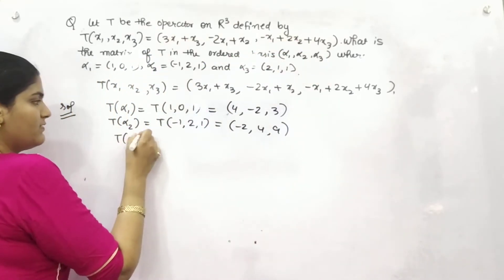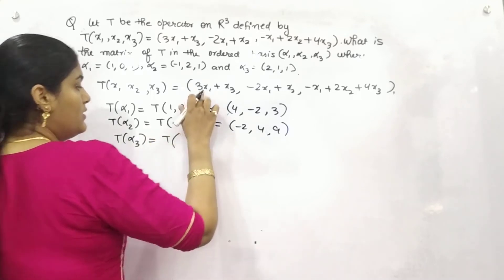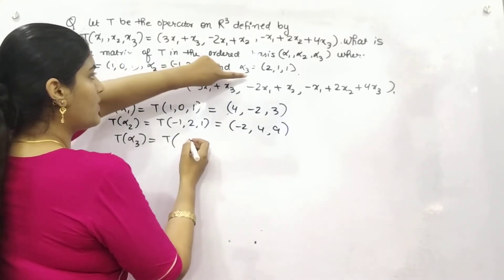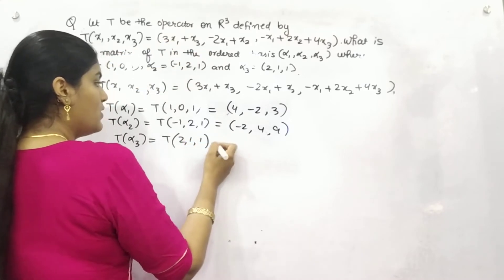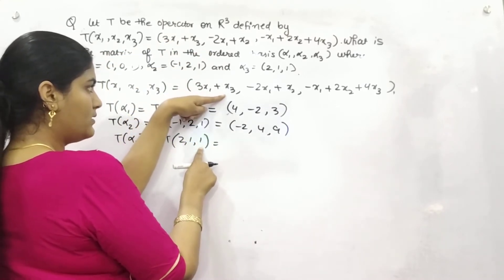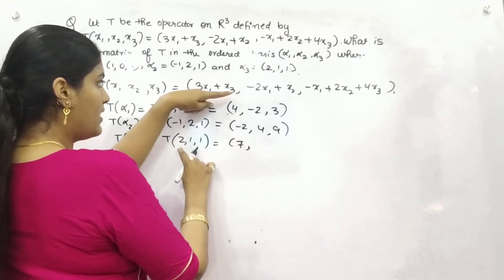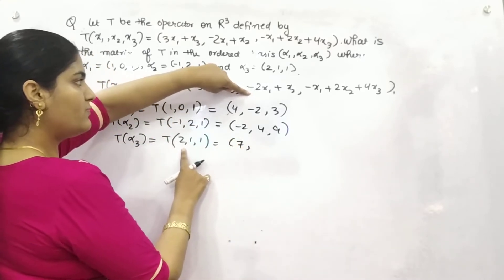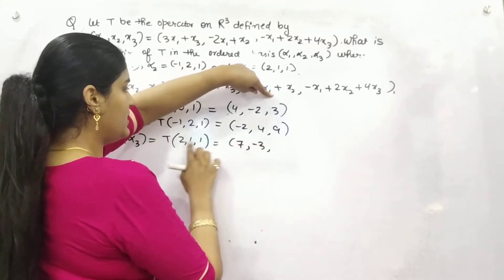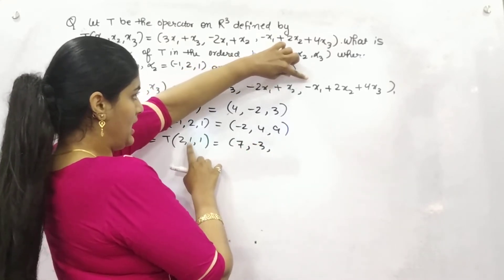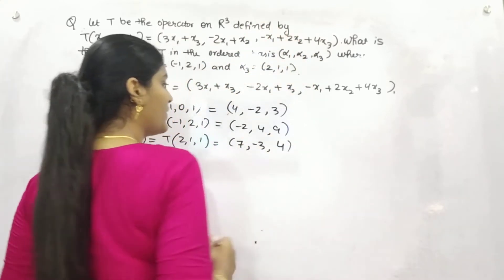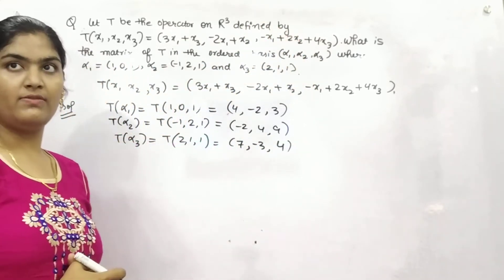For T·α3, α3 is (2, 1, 1). So: 3×2 + 1 = 7; minus 2×2 minus 3 + 2 = minus 3; and 4×1 = 4. So T·α3 = (7, -3, 4).